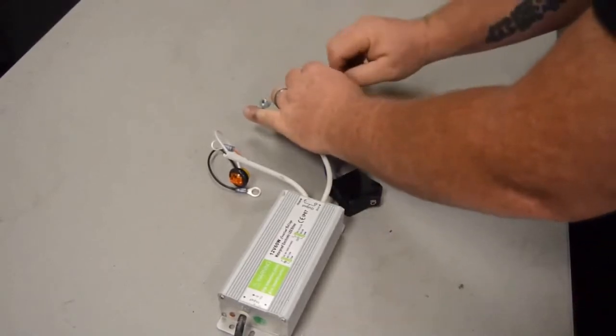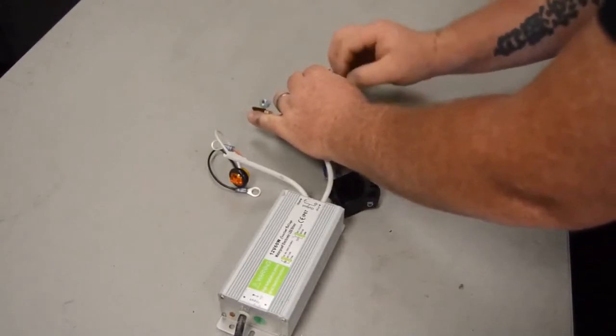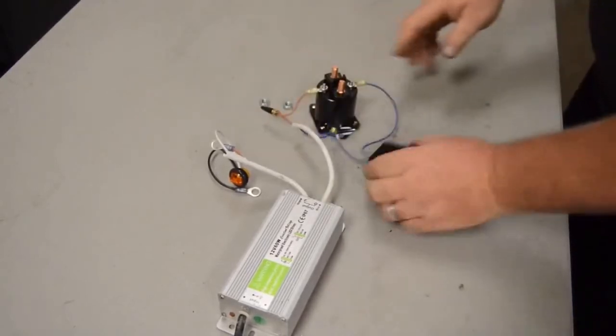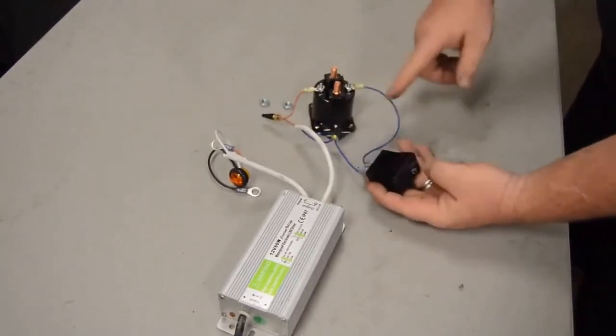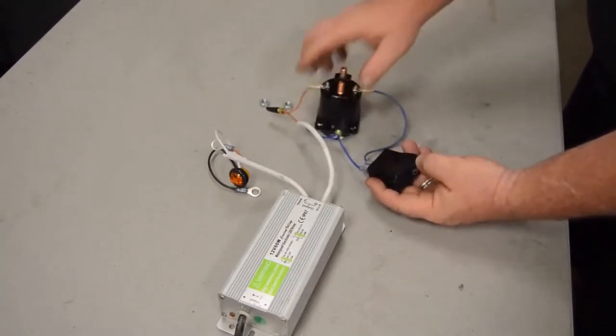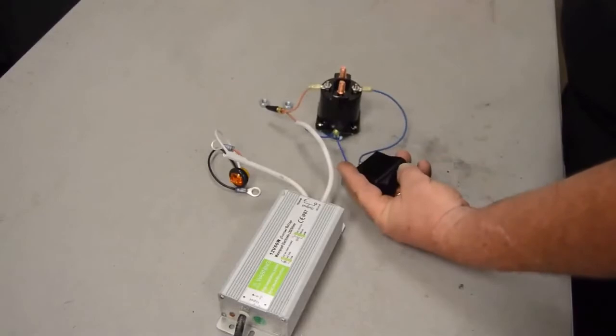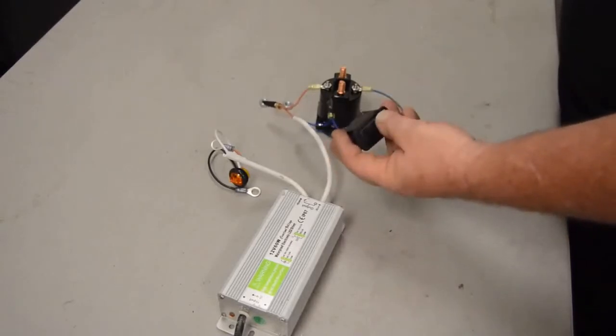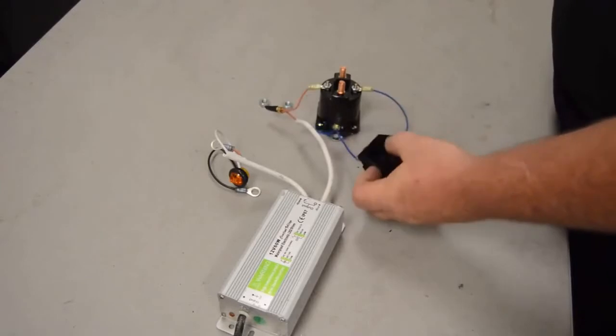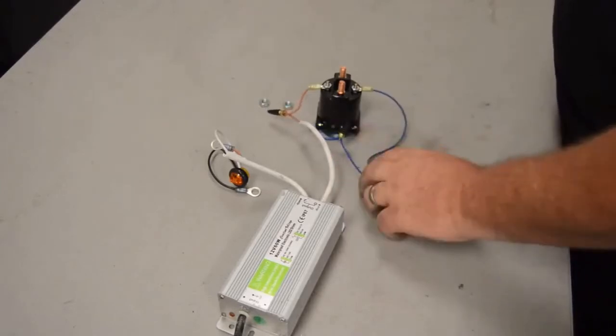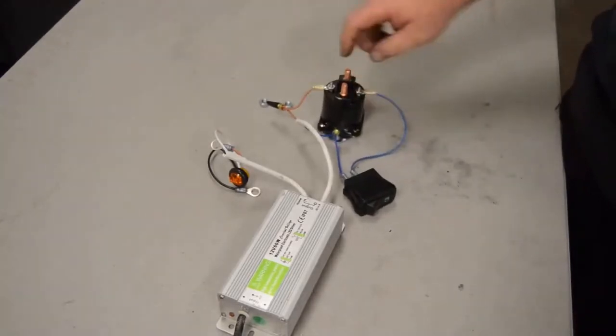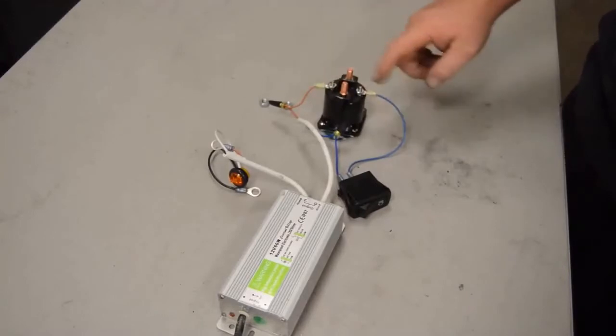We'll go ahead and put this on. All right, so now when I hit this switch we're going to make a connection here at the switch and it'll go ahead and turn the solenoid on. Watch, see there. And this is just a light switch, literally the same thing that on the wall when you turn the light on, it's very similar.